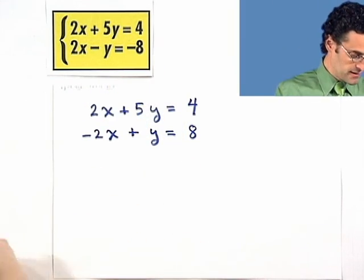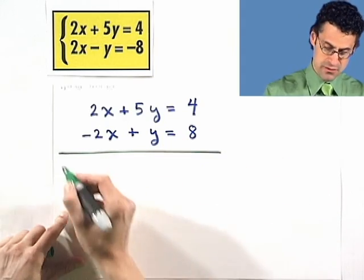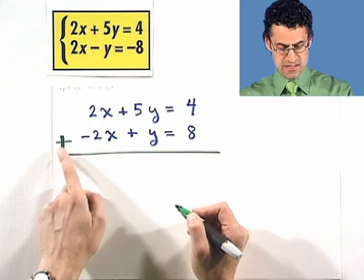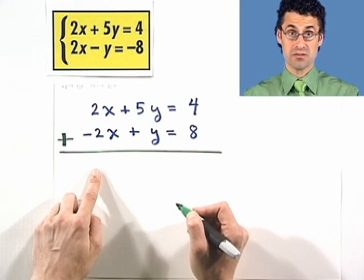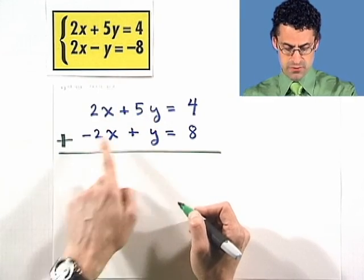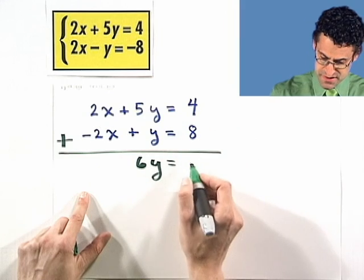But now this is perfect for elimination. Do you see why? I can now take these two equations and add them together. Look what happens. I see 2x plus negative 2x. That cancels out to be 0. So I've eliminated that. This becomes 0, and here I see 5y plus y. That's 6y equals 12.